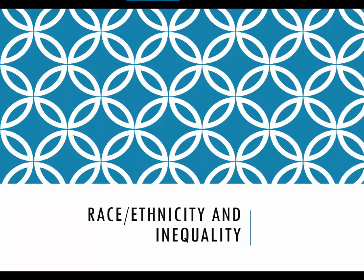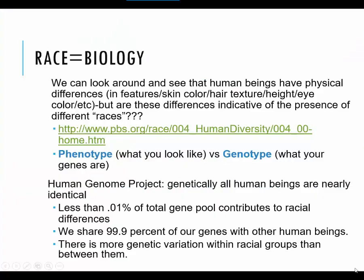Jumping into this first video with our primary concept: race. We can look around and see that human beings have physical differences — different facial features, sizes and shapes, different skin colors, hair textures, height, eye color. But do these differences necessarily mean that we are different races of people, different species or subspecies?